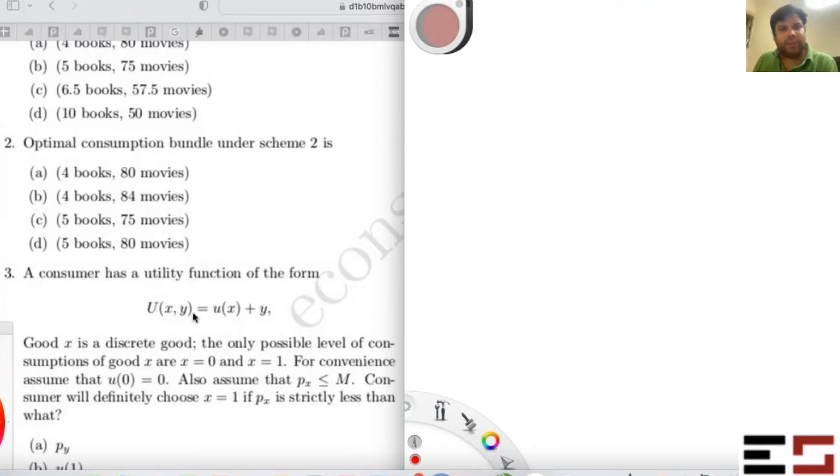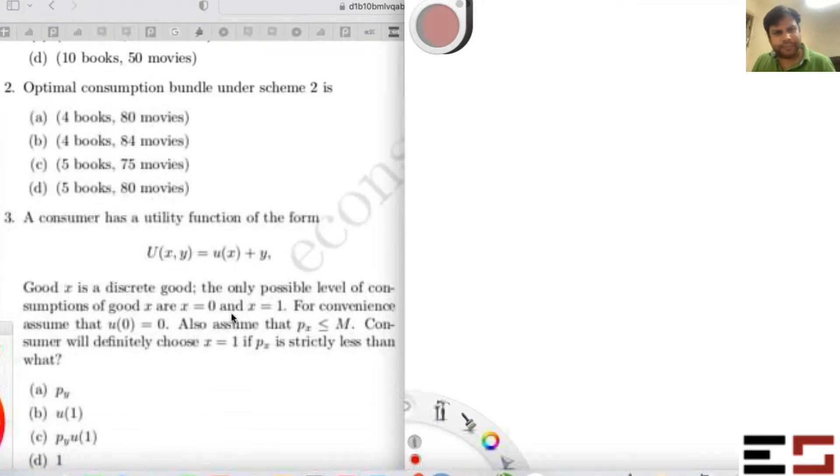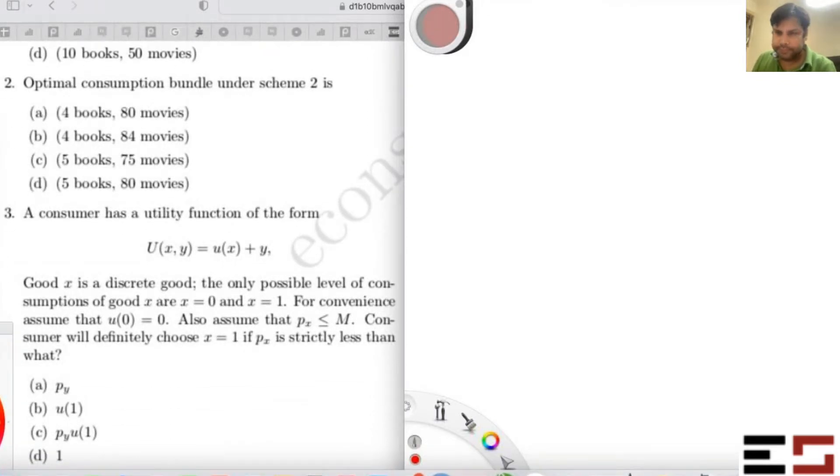Okay, so let's do this one now. Just all of you read this problem. Suppose a consumer has a utility function of the form U(x,y) = u(x) + y. Good X is a discrete good and there are only two possible consumption levels: X is 0 and X is 1.